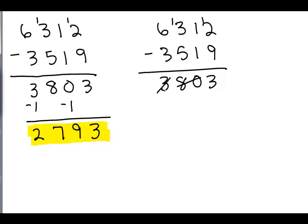So 1 less than 3 is 2, 1 less than 80 is 79, and this is still 3. I actually like it better writing the minus 1 myself, but when I first learned it, it was called slash arithmetic where you could just slash it out like that.